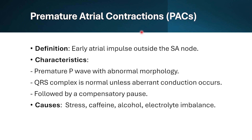For premature atrial contractions, they are early atrial impulses outside the SA node. The characteristics are: they have a premature P wave with abnormal morphology, the QRS complex is normal unless aberrant conduction occurs, and it's followed by compensatory pauses. They're caused generally by stress, caffeine, alcohol, and electrolyte imbalances.